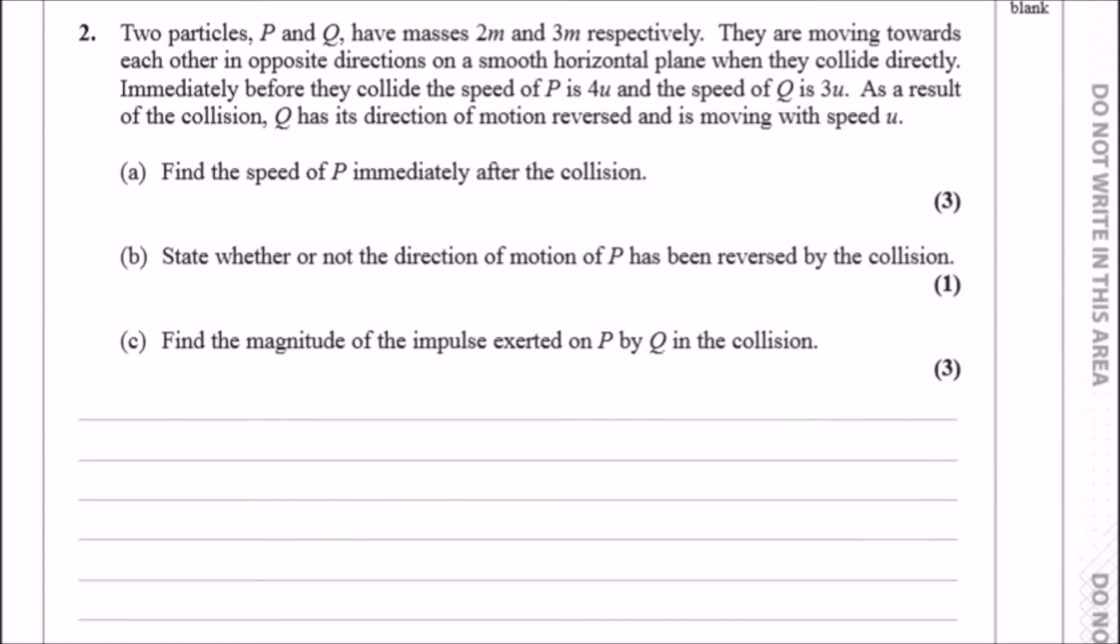Okay, question two. We have two particles P and Q with masses 2m and 3m respectively. They are moving towards each other in opposite directions on a smooth horizontal plane where they collide directly. Before the collision, the speed of P is 4u and the speed of Q is 3u.